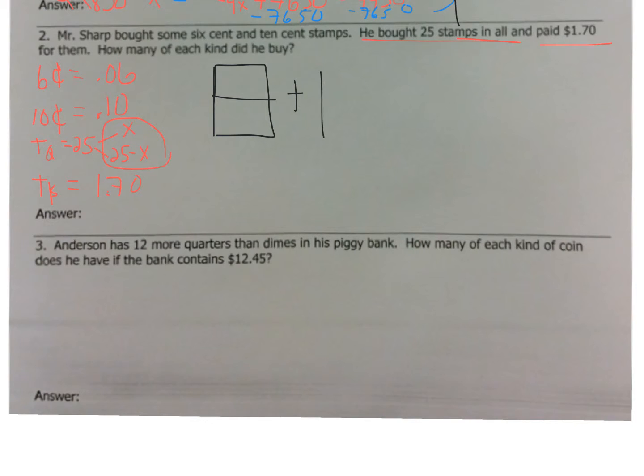We have the 6 cent, we have the 10 cent, we have our total. So, let's fill in what we know. 6 cent, value is 0.06, quantity I'm going to give X. 10 cent, 0.10, this will be 25 minus X. It's going to equal to $1.70. So, now that we're set, let's multiply down. 0.06X plus, now 0.10, again, I always set up for the distribution, equals 170.